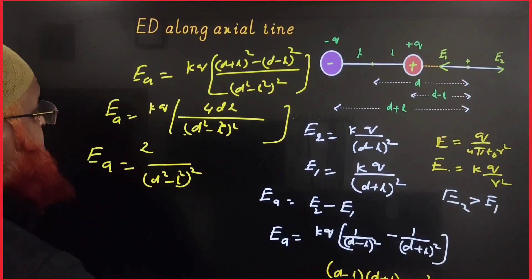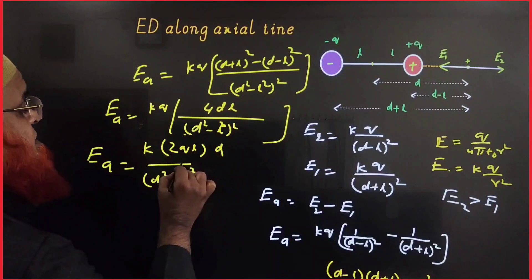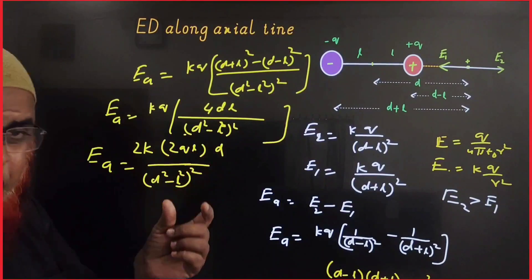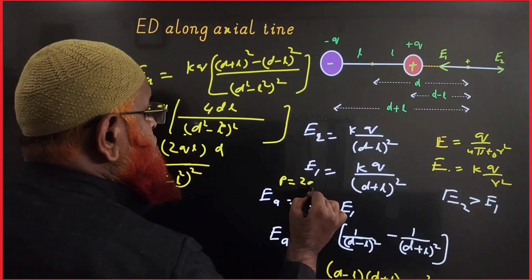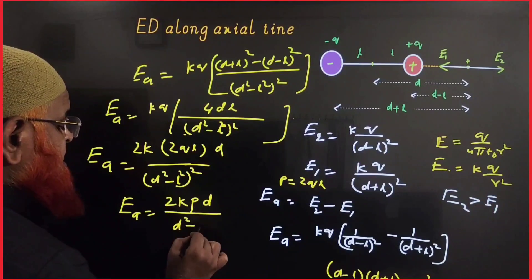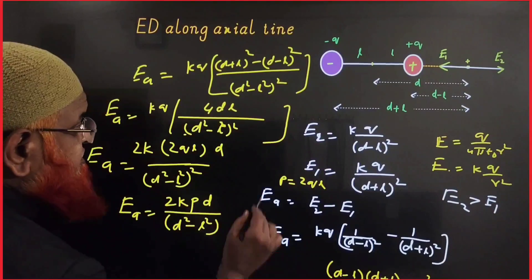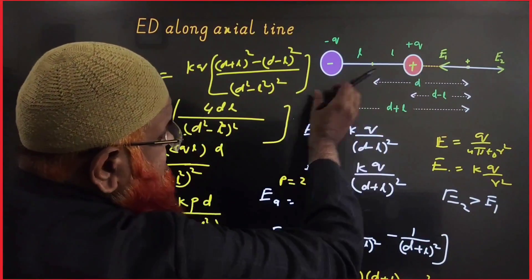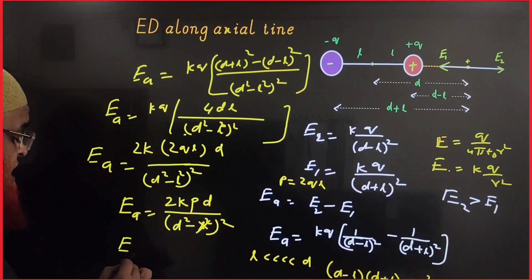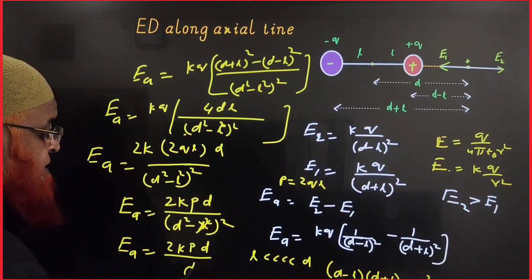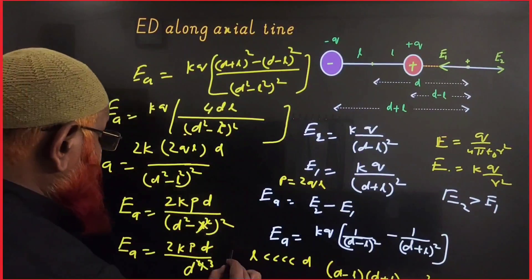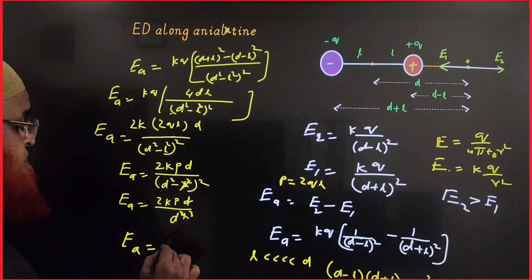Rewriting, you take 2K and 2QL separately, since the dipole moment P equals 2QL. Therefore, E along the axial line equals 2KPD divided by (D² − L²)². For a short dipole where L is very small compared to D, L can be neglected. Then (D² − L²)² becomes D⁴, and D cancels, leaving E_A = 2KP/D³.